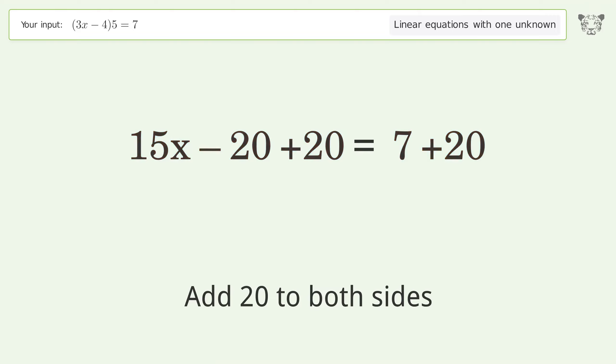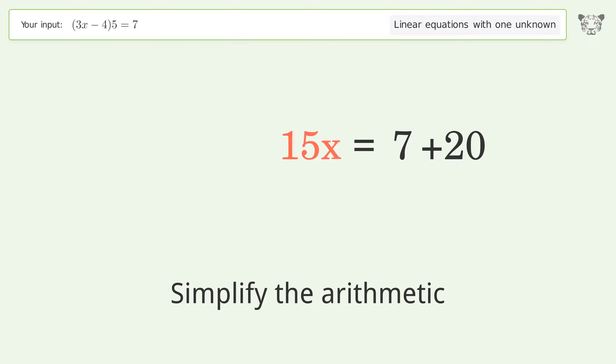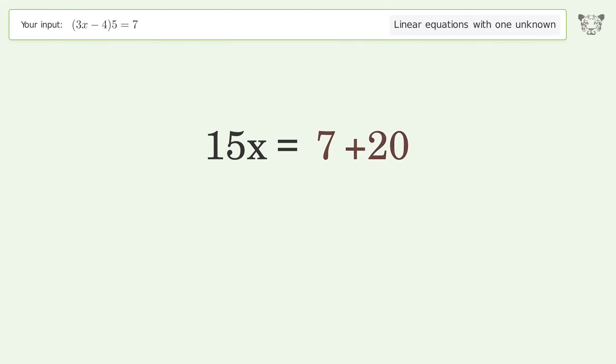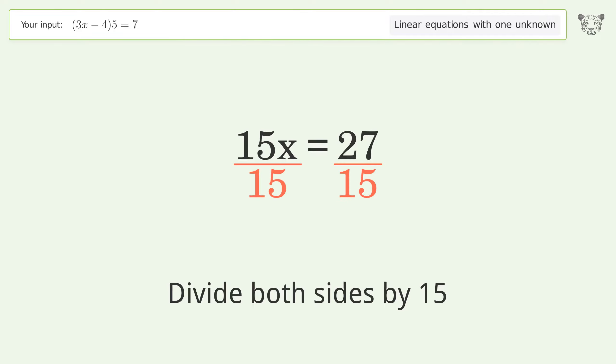Group all constants on the right side of the equation. Add 20 to both sides. Simplify the arithmetic. Isolate the x. Divide both sides by 15.